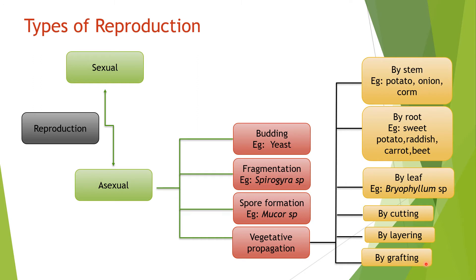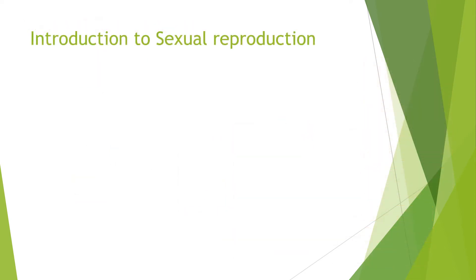Today we will discuss vegetative propagation broadly and get an overview of sexual and asexual reproduction. Sexual reproduction in plants can be found in the higher group of plants — higher group means angiosperms — that means those plants which bear flowers.